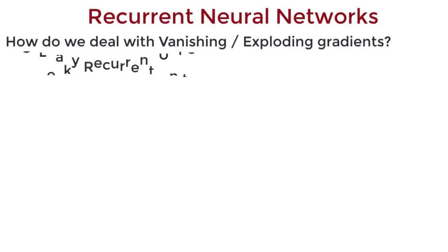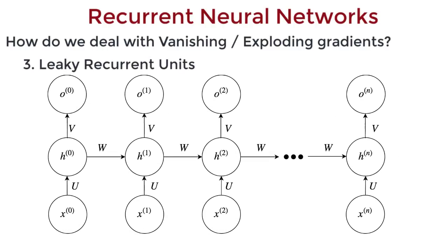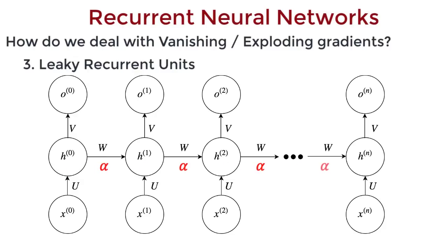Now, the third thing we can do is, well, let's consider our vanilla recurrent neural network. But this time, append a constant alpha over every edge joining the adjacent hidden units. This alpha can regulate the amount of information the network remembers over time.